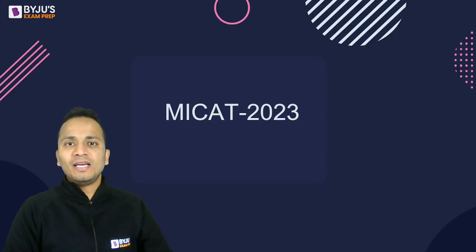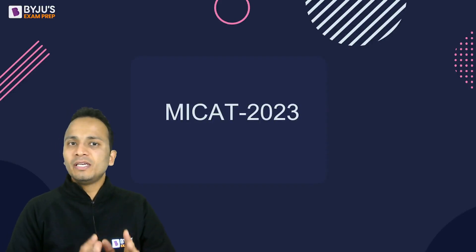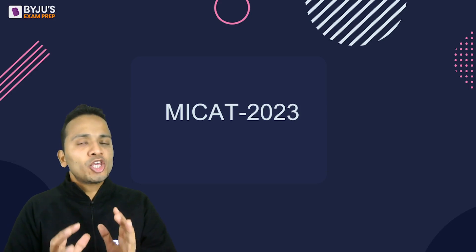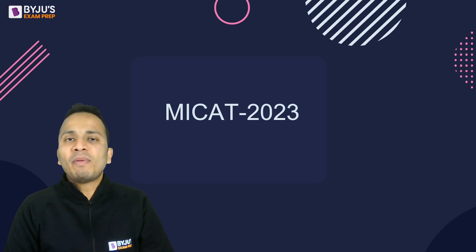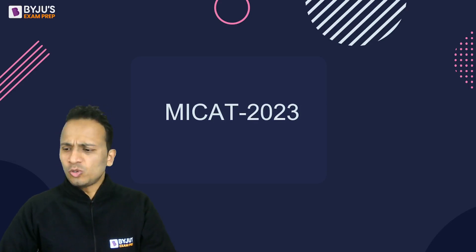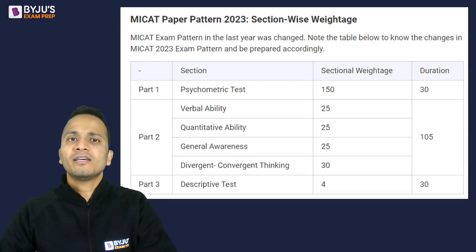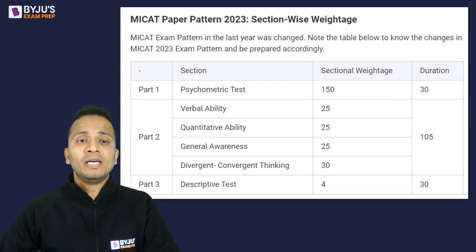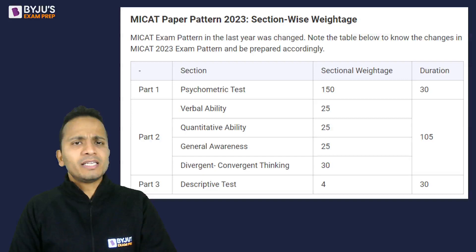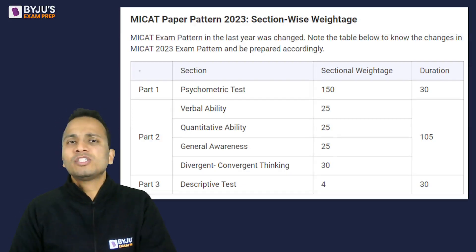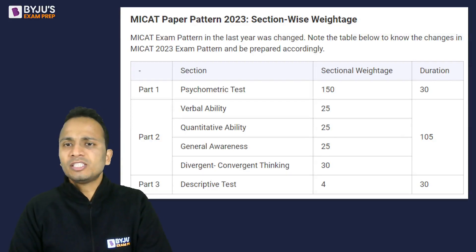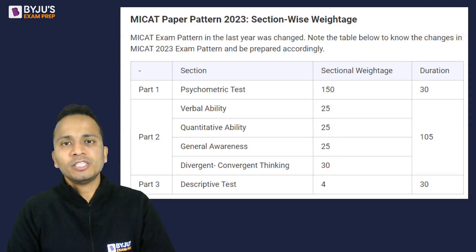Hello friends. Today in this session we'll be briefing you about the QA section of MYCAT 2023. I'll first start with the overall pattern of MYCAT. MYCAT is divided into three parts. Part one is the psychometric test, with a weightage of 150 and a duration of 30 minutes.